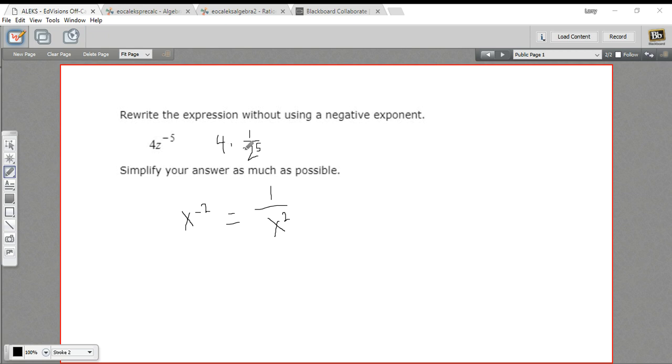And then if we're multiplying that 4 in, it goes on the top, so this would just be 4 over z to the 5th power.